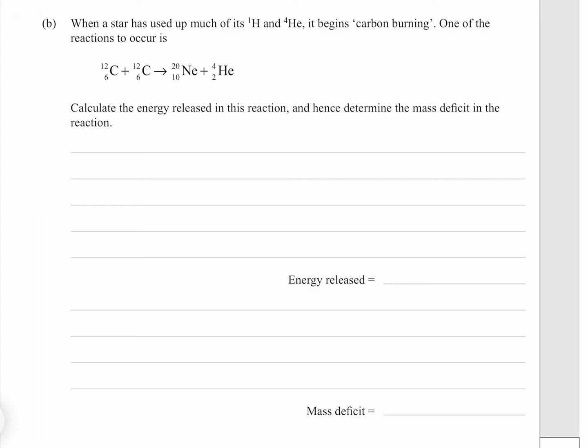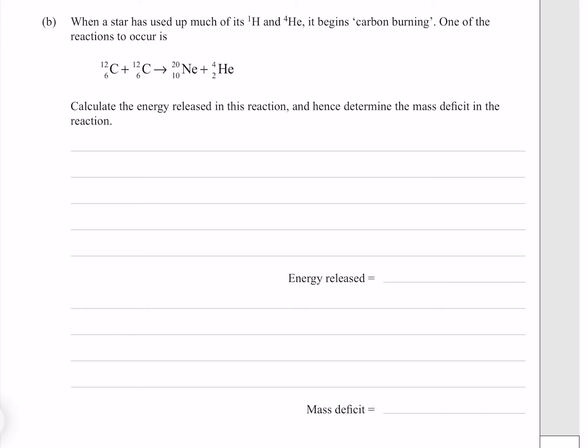When a star has used up much of its hydrogen and helium, it begins carbon burning. One of the reactions to occur is this one here. Calculate the energy released in this reaction, and hence determine the mass deficit in the reaction.